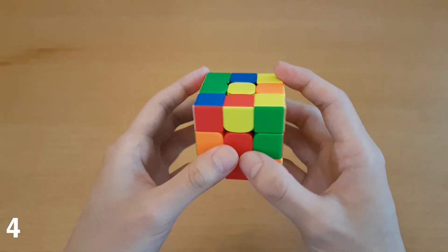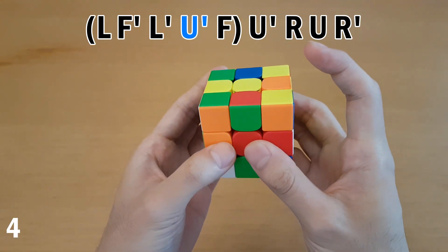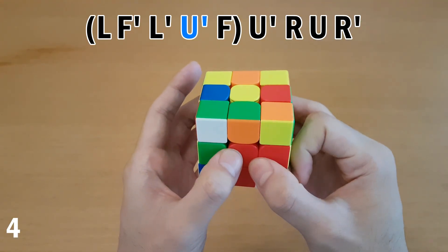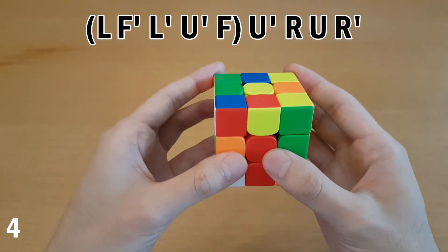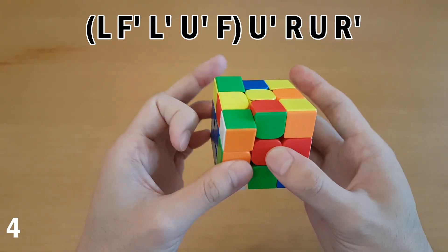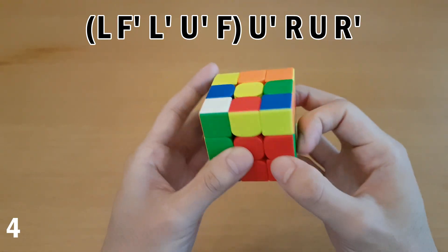For this case with white on the front, you want to do a left sledge, but before the last move, do U prime, and that puts the edge in just the right spot, and now you can insert them. How I do the finger tricks for this is for the F prime and then the U prime, I use index and middle finger, and then F here and insert.